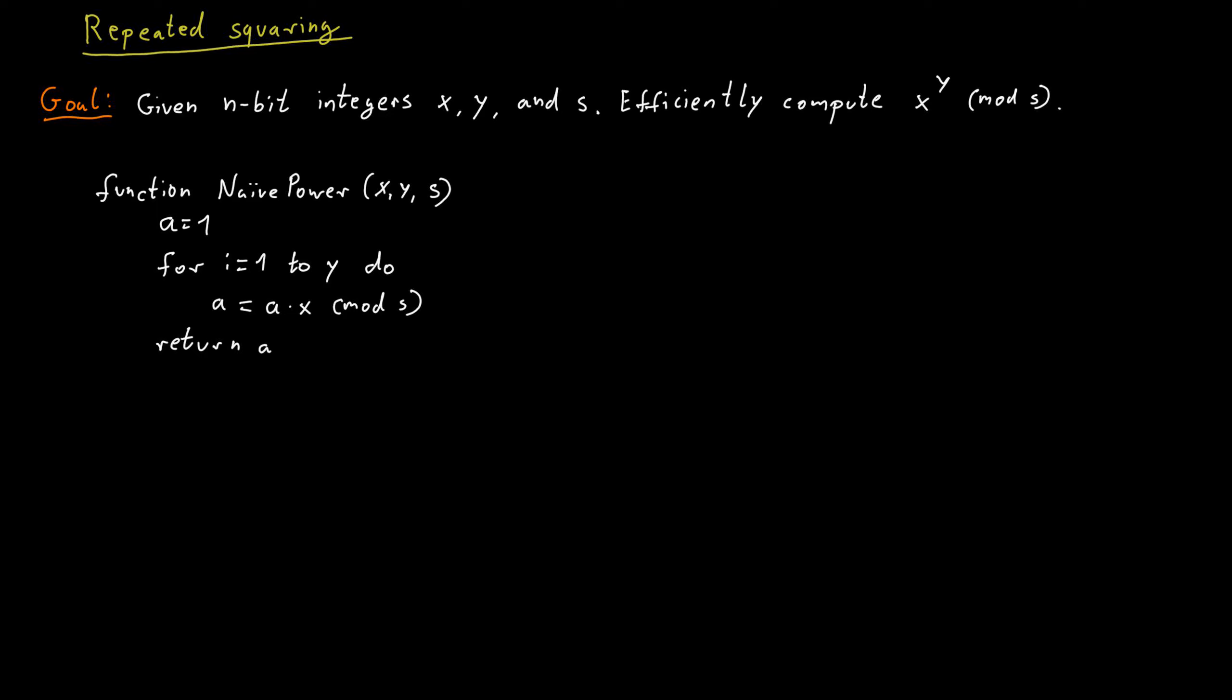The problem with this is that it's not efficient because we would go through the loop y number of times. But we said y is an n-bit number. So the size of y, the value of y, might be as large as 2 to the n.